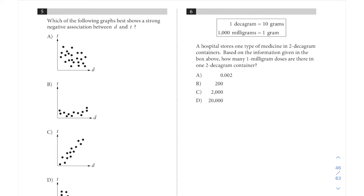It says which of the following graphs best shows a strong negative association between D and T. So first of all, our keyword is negative association. When you're looking at a graph and they say association, we want to think of slope. We want to think of something that shows a negative relationship or an inverse relationship between the values on these axes.